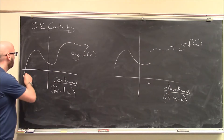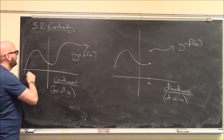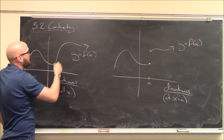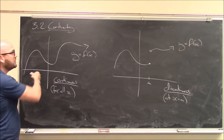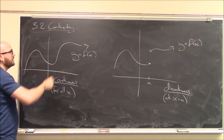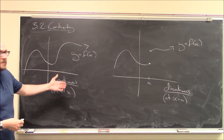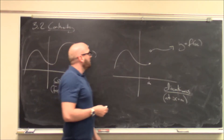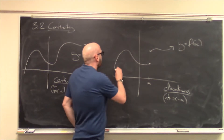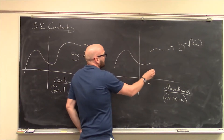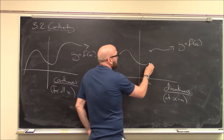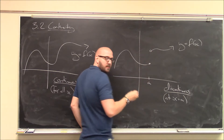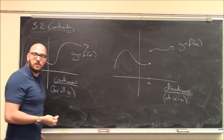For example, this function I've drawn here — I can draw this entire line without ever having to lift my chalk from the board, so this is a continuous function. It's continuous for all values of x. Meanwhile over here, this function — if I was drawing this, there's no way I can draw it without having to lift my pencil to jump from here to here. So it's a discontinuous function.